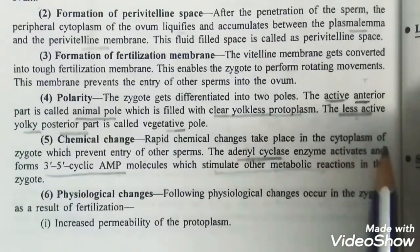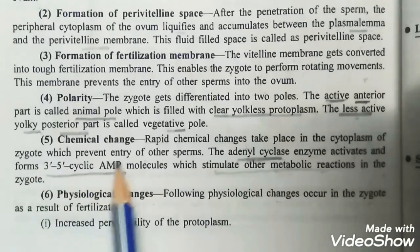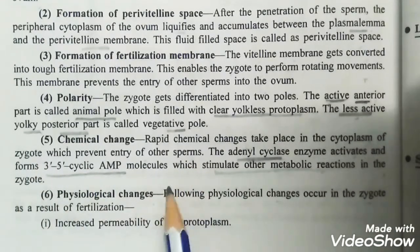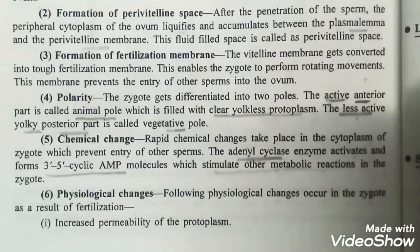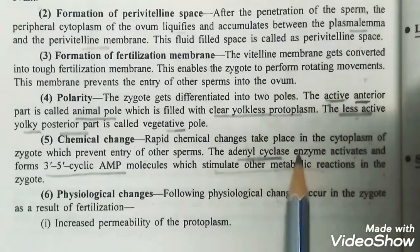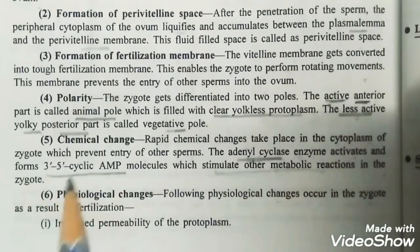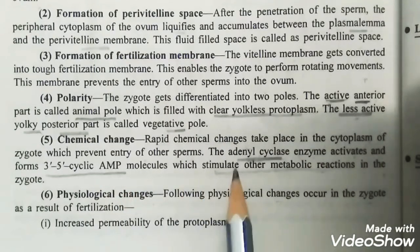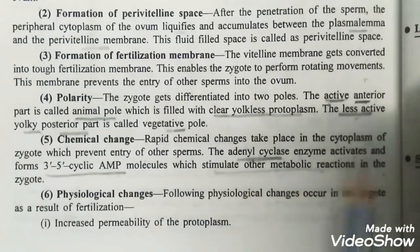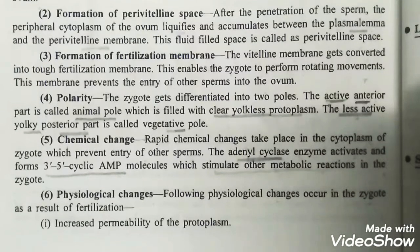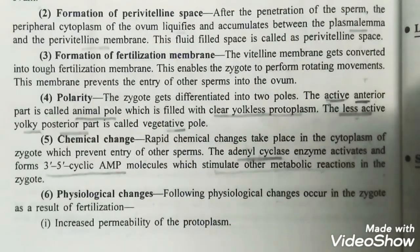Next is chemical change. Rapid chemical changes take place in the cytoplasm of the zygote, which prevent the entry of other sperms. The adenyl cyclase enzyme activates and forms 3'-5' cyclic AMP molecules, which stimulate other metabolic reactions in the zygote.